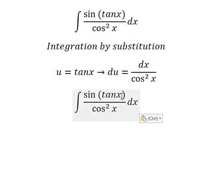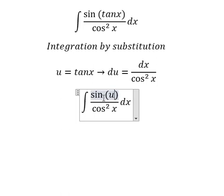Next, this one we change by u. The dx over cosine x square we change by du.